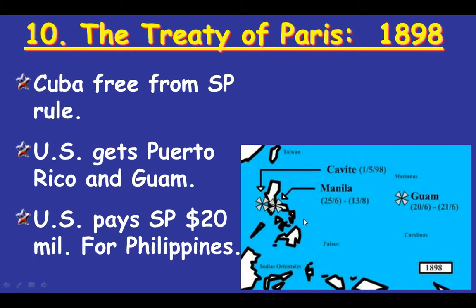The war is very quick and short — the actual fighting and shooting is about three months. The United States is unorganized and chaotic, but the Spanish Navy and military is antiquated by comparison, and they're fighting from a very far distance. The war ends in less than a year. The Treaty of Paris is signed in 1898 and is very generous to the United States: Cuba is free from Spanish rule, the U.S. gets Puerto Rico and Guam as actual territories, and pays Spain $20 million for the Philippines.